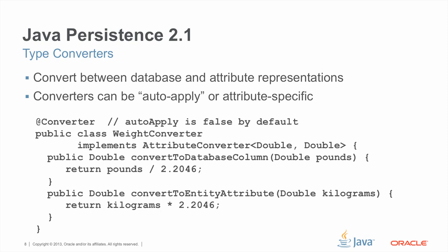Type converters are a facility we've added to convert between database and object attribute representations. This conversion can be both semantic as well as at the type level. Converters can be either what we call auto-apply — automatically applied to all attributes of the target type — or they can be invoked on an attribute specific basis. By default, auto-apply is false. This example illustrates why: here's a converter defined to convert between pounds and kilograms. We have to supply both conversion methods — the one that converts to the database representation, and the one that converts back to the Java object representation. This weight converter is typed over doubles, so unless we have an extremely trivial database, we wouldn't want it to be an auto-apply converter.